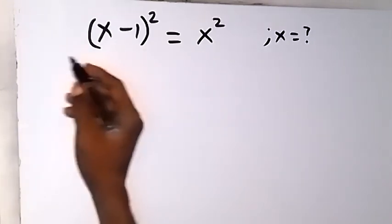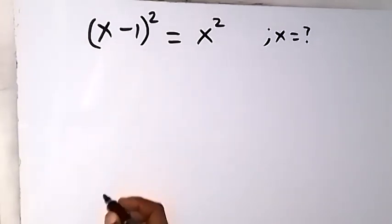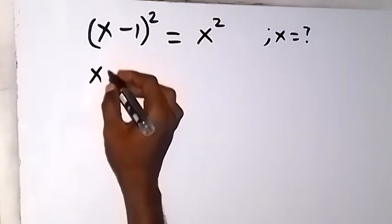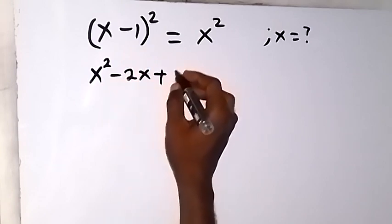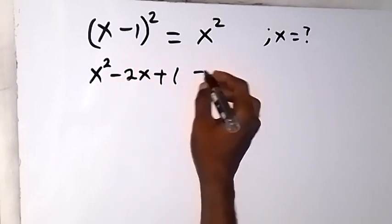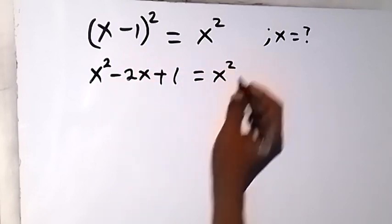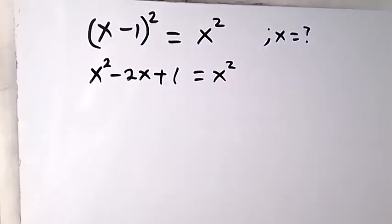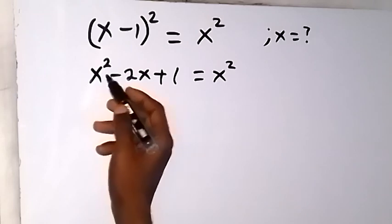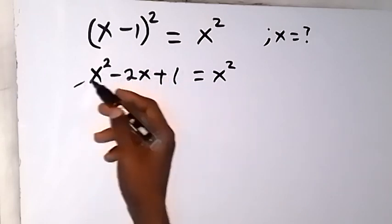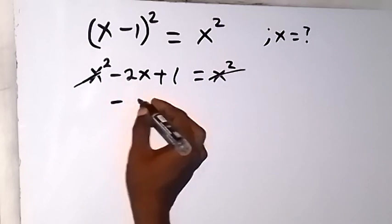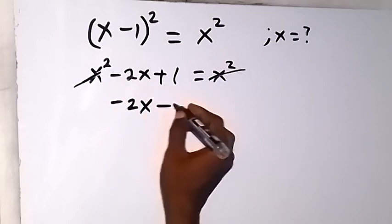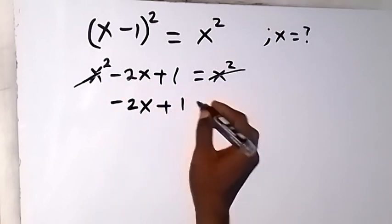Here we can expand this side. And when we expand this side, we have x squared minus 2x plus 1, which is equal to x squared. From here, we can subtract x squared from both sides, such that x squared will go here and x squared will go here. This side will mean zero.